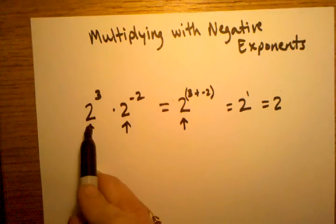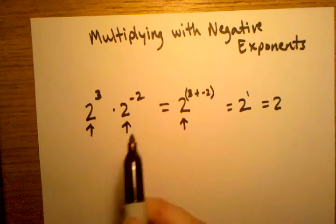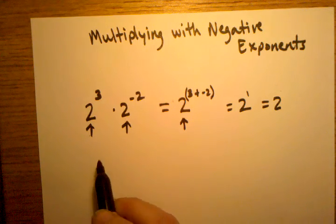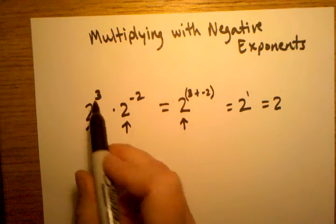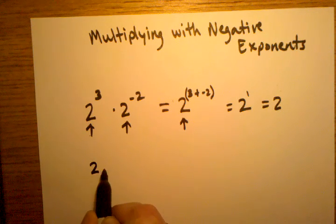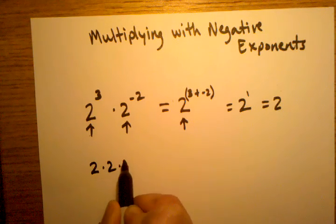Now if we write this entire problem out, what I call solving it the long way, then what we would have here is 2 to the third power equals 2 times 2 times 2,